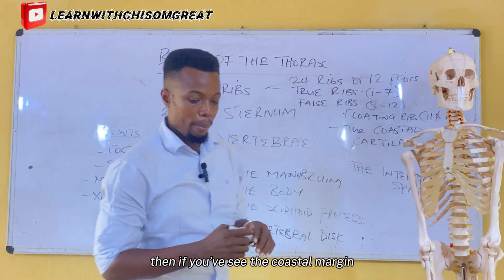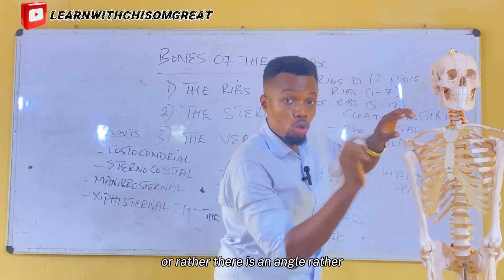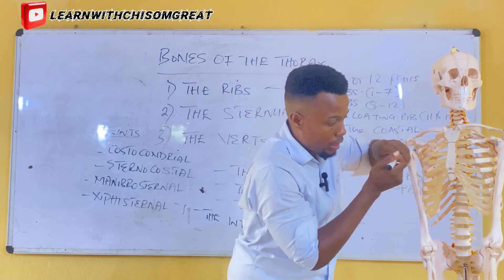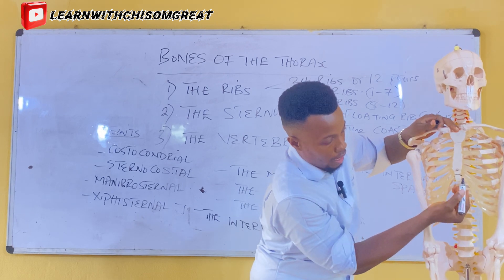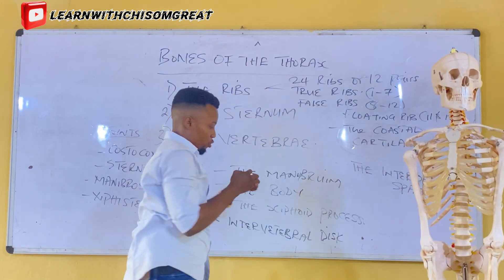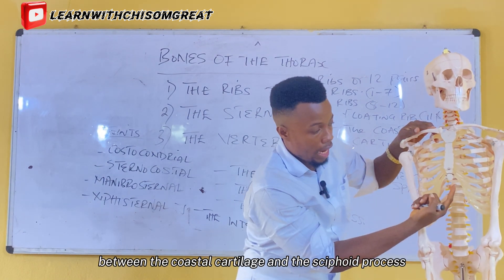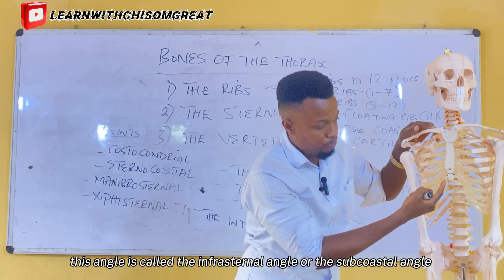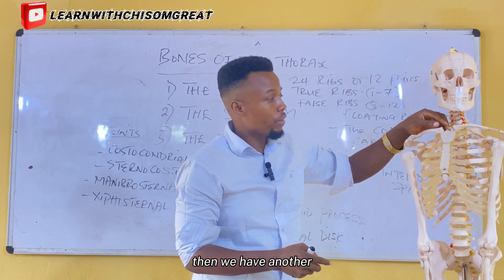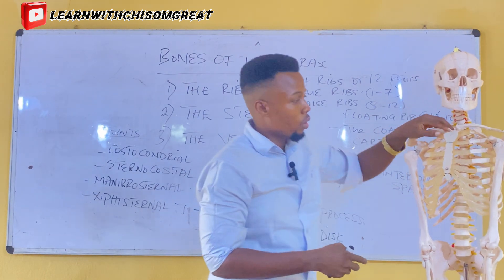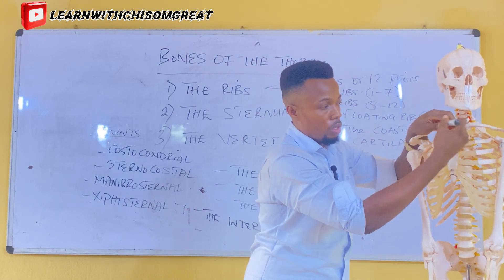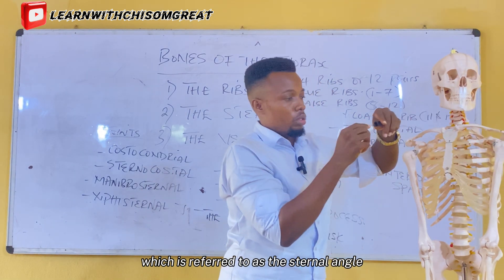There is an angle formed between the xiphoid process and the costal cartilage — this angle is called the infrasternal angle. There is also another feature here — a projection which is referred to as the sternal angle.